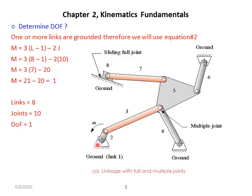Let's count the number of links. The four ground links count as a single link, which is link number one. Then link number two, three, four, five, six, seven, and the sliding joint link. So the total number of links is eight. We put the value of l equal to eight.